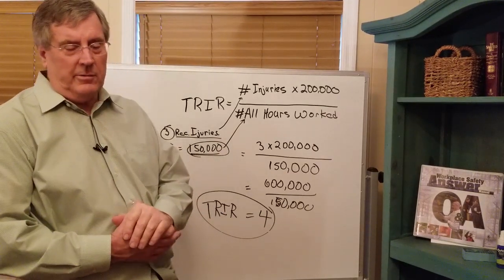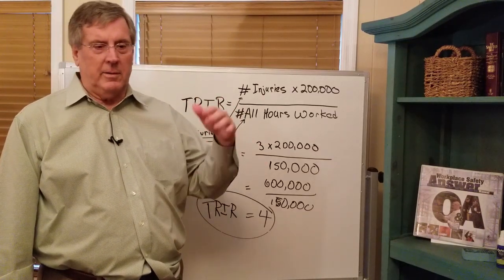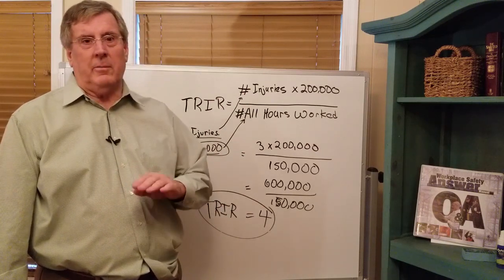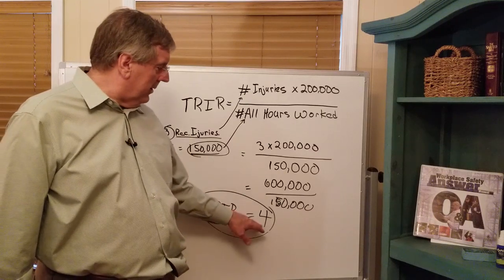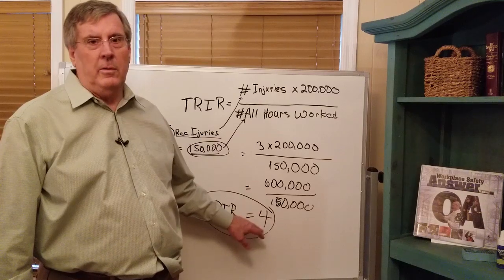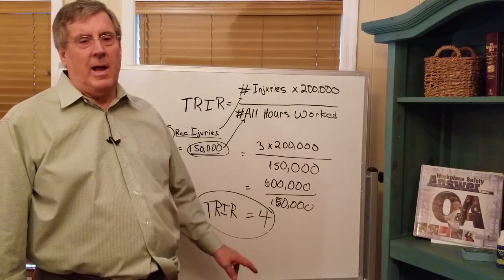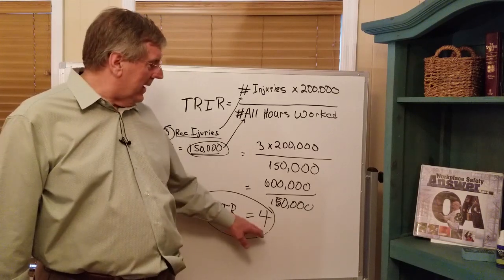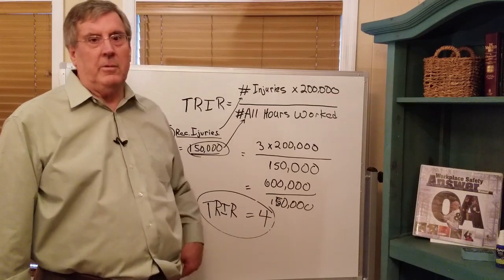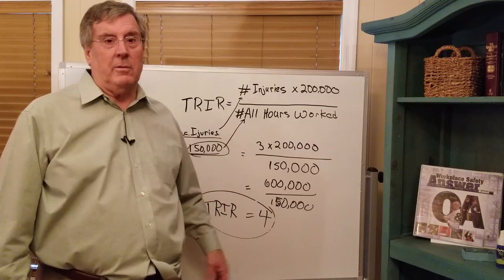Another use for this number: if you're a small construction company wanting to get contracts with large multi-hundred-million-dollar companies, they're going to want to know your safety record. They'll want to know if you come on their site whether there will be a problem, and they determine that partly based on your OSHA injury rate. So there are good reasons to keep your score as low as possible.